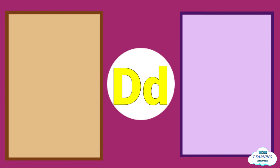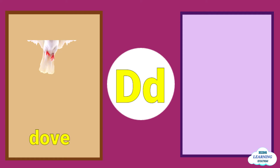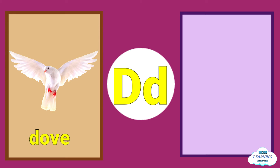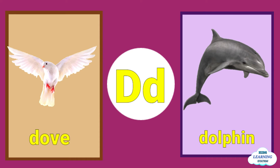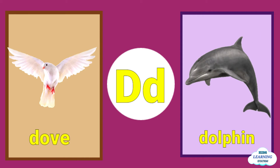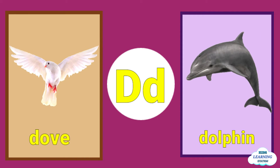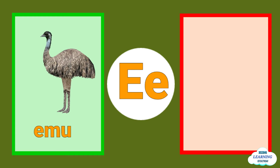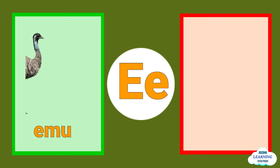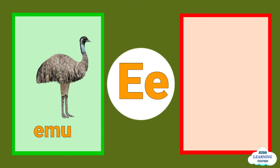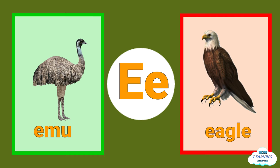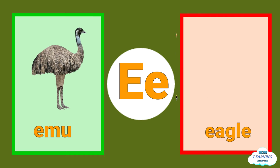D is for dove. D is for dolphin. E is for emu. E is for eagle.